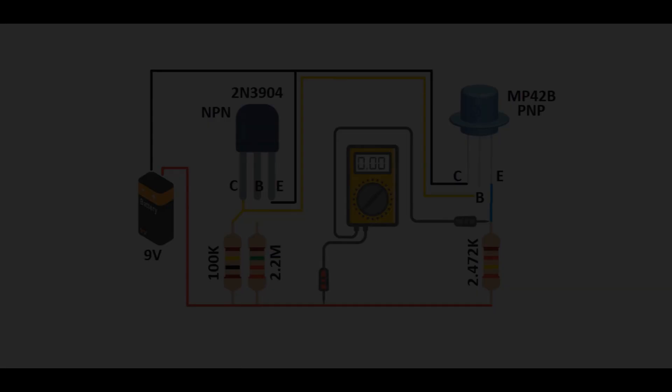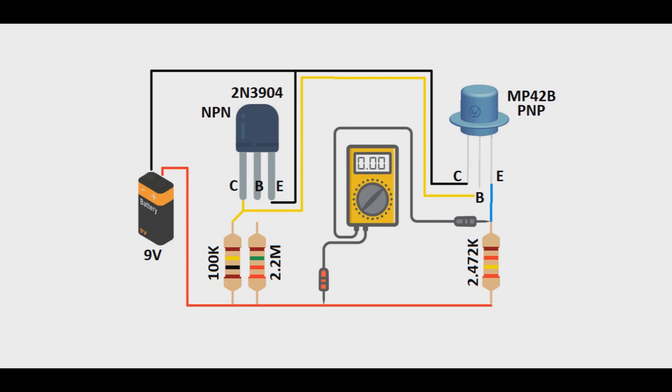So here we have our setup for our Sziklai pair. We have a PNP germanium transistor for that sweet sound we want, but we keep the whole circuit NPN for those types of advantages we get from NPN circuits, and we get the lower leakage and much higher gain due to our silicon NPN transistor in our pair. So let's measure the leakage. On our breadboard we got a voltage readout of 0.129 volts on the collector resistor. 0.129 divided by 2.472 equals 0.052 milliamps or 52 microamps of leakage, which is really really good.